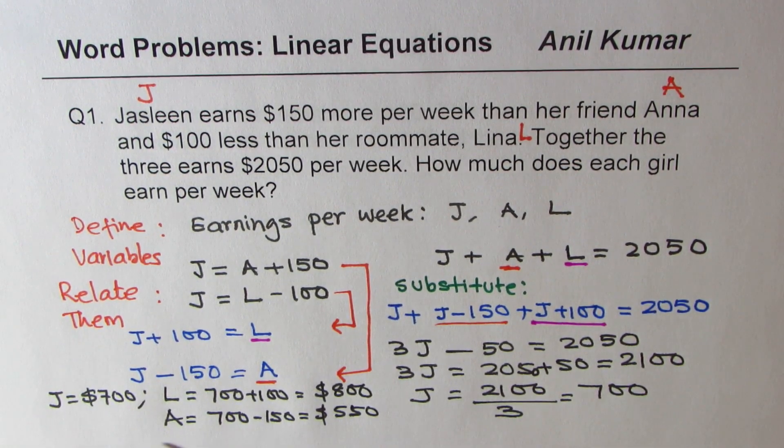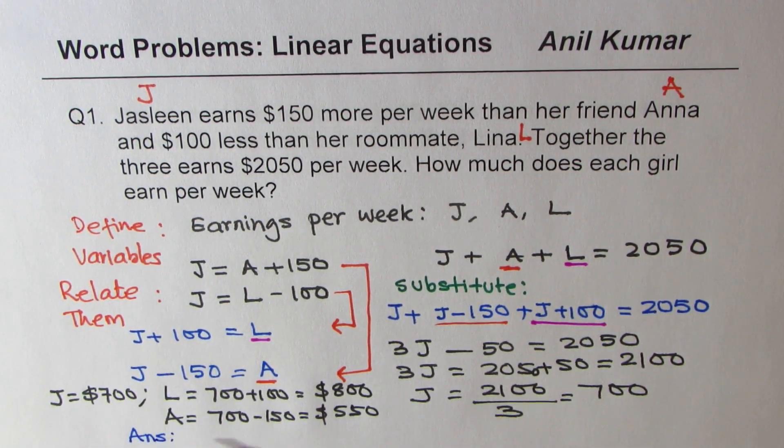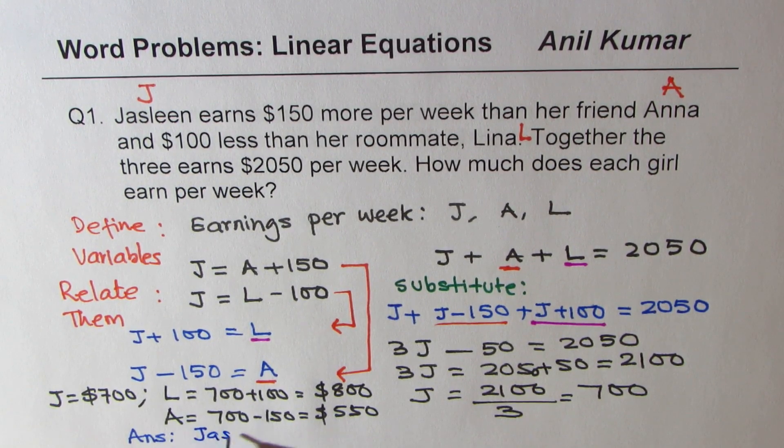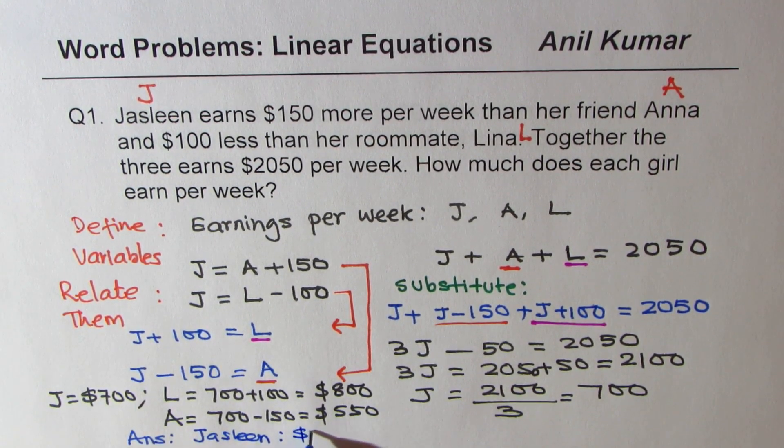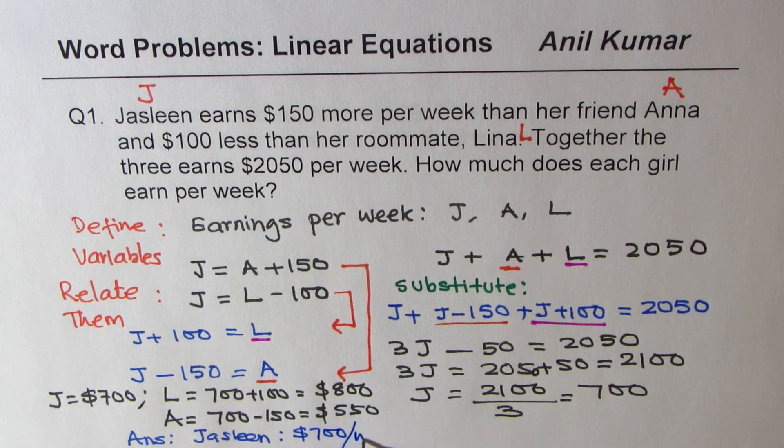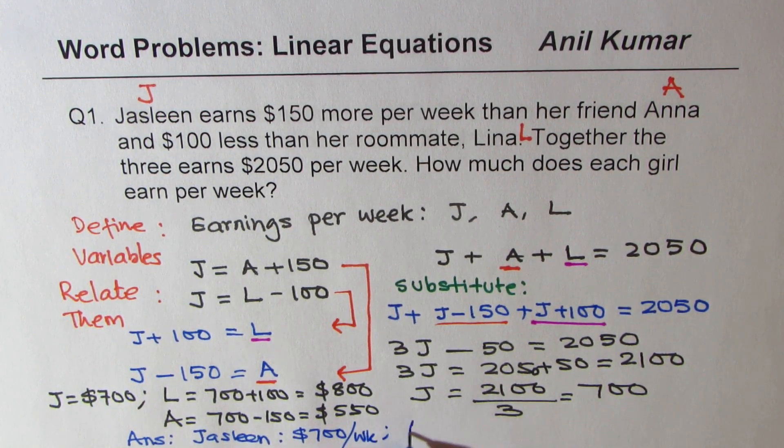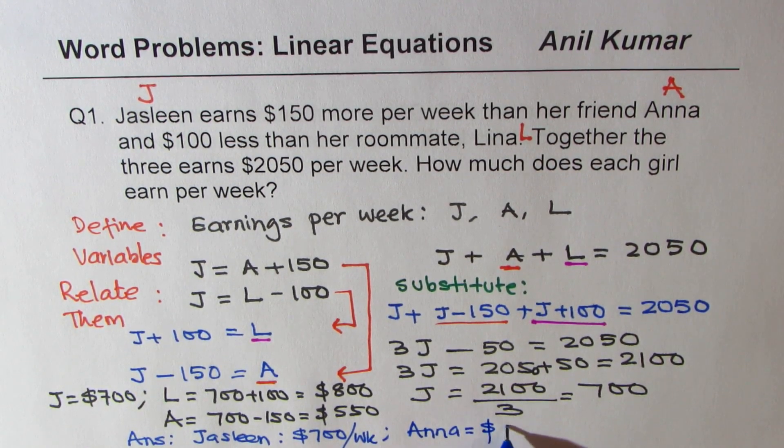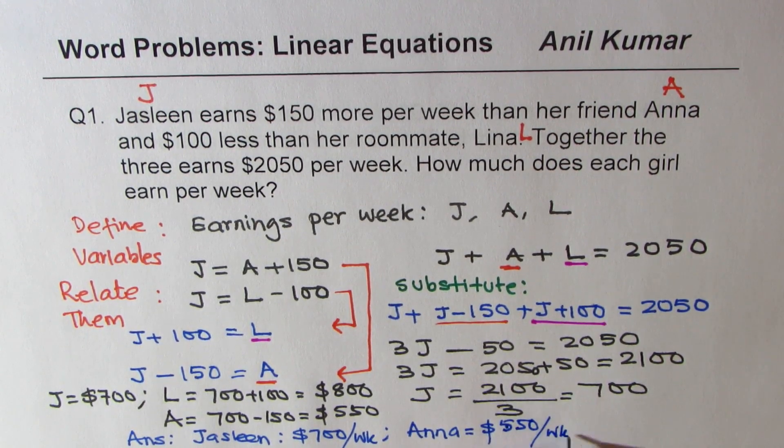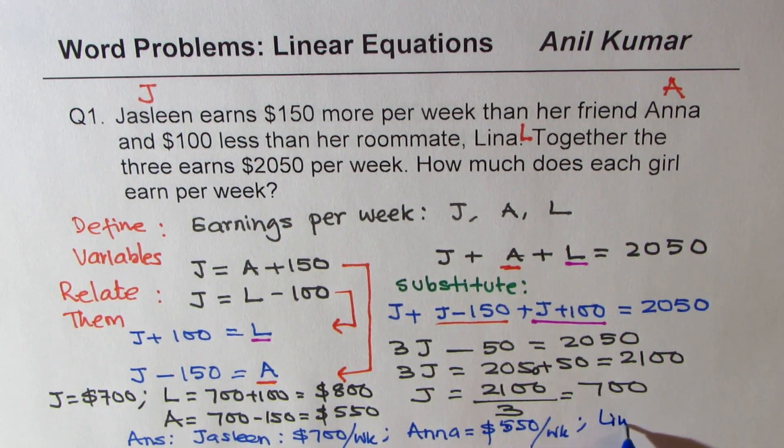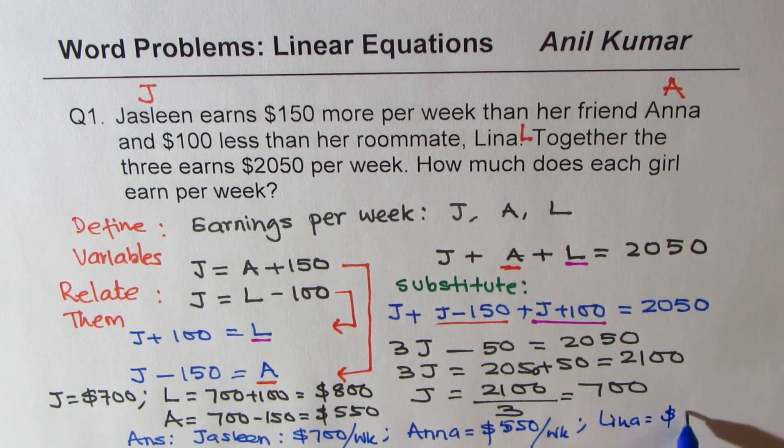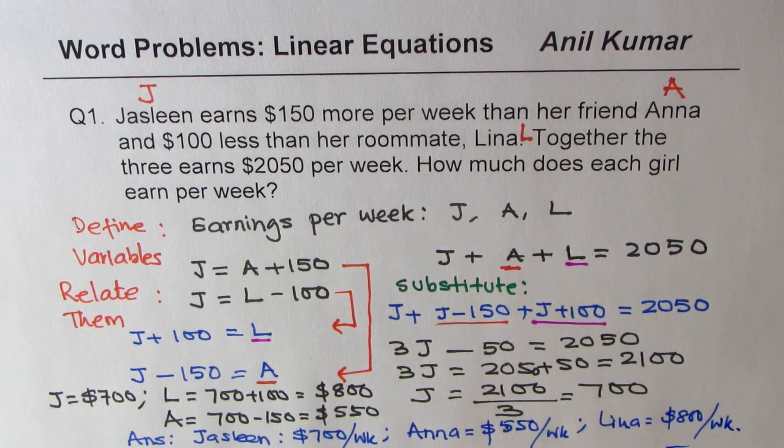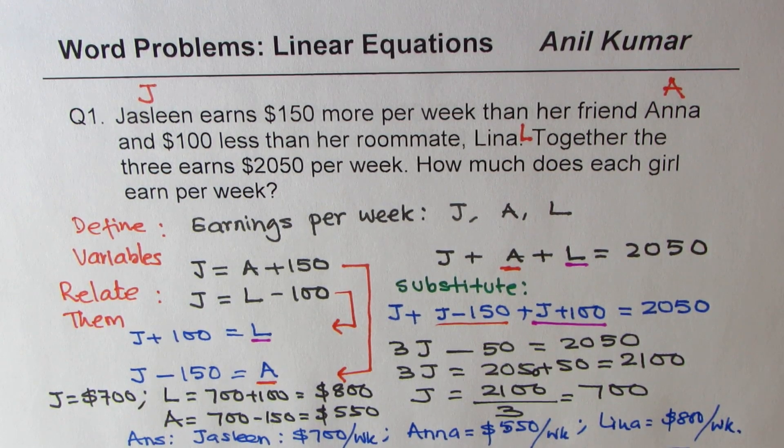So we can now write down our answer that the earnings are: for Jasleen, it is $700 per week, for Anna, it is $550 per week, and for Lina, it is $800 per week. So I hope the steps are absolutely clear. That is how you're going to solve the word problems.